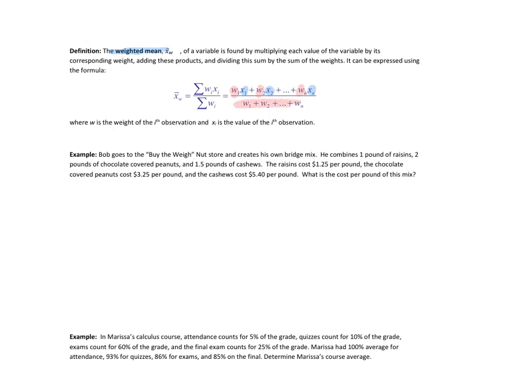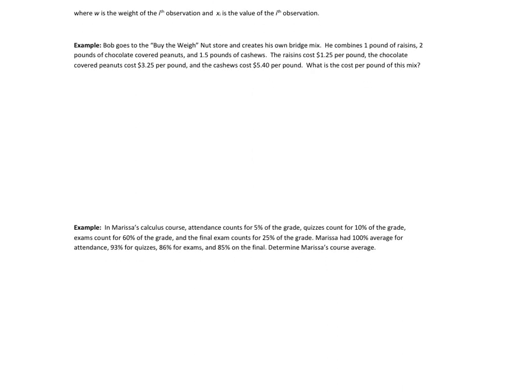So similar definition. So x_i could be considered the midpoint. And then w, that used to be the frequency, but now it stands for just the weight. So let's look at this example. Bob goes to the nut store and creates his own bridge mix. So he combines one pound of raisins, two pounds of chocolate covered peanuts, and one and a half pounds of cashews. The raisins cost $1.25 per pound. The chocolate covered peanuts cost $3.25 per pound. And the cashews cost $5.40 per pound. What is the cost per pound of this mix? So it's helpful to know, just kind of write out your units. So we want to know the cost per pound. So our final answer has to be in terms of dollars per pound.